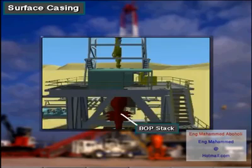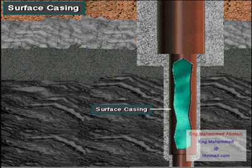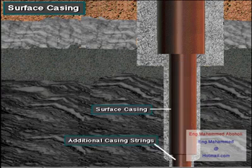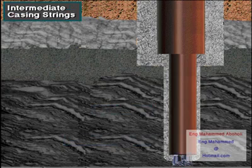Normally crew members nipple up, or connect, the BOPs to the surface casing at the wellhead, so this casing must be strong enough to support the BOP stack. In addition, it has to withstand the gas or fluid pressures the well may encounter. Surface casing also has to be strong enough to support the additional casing strings hung inside of it.